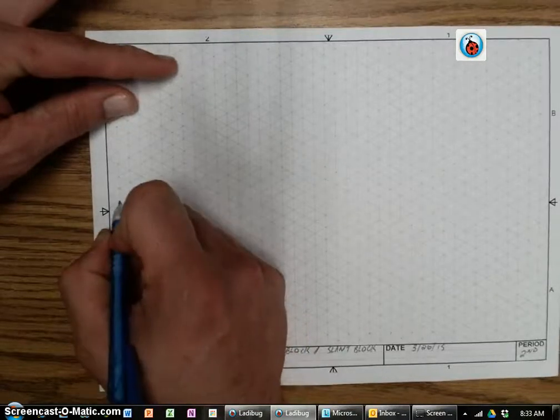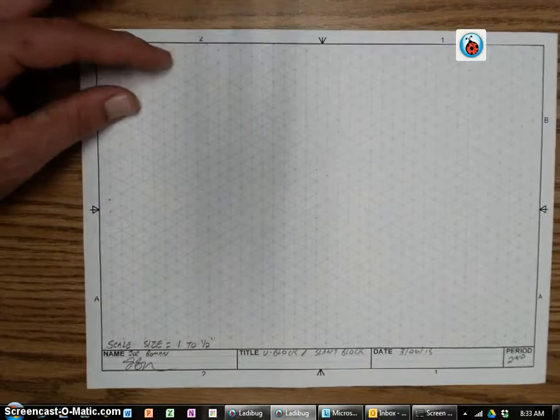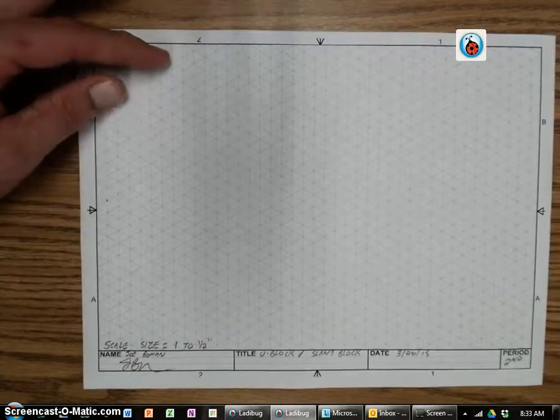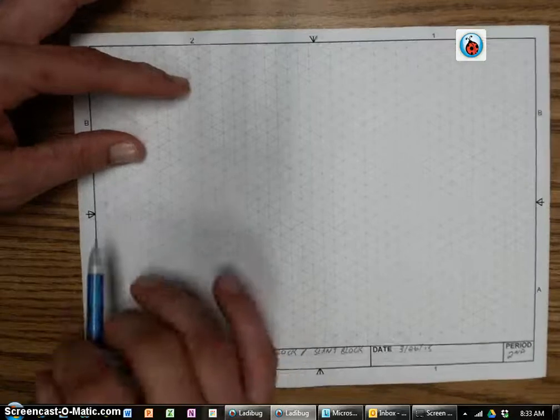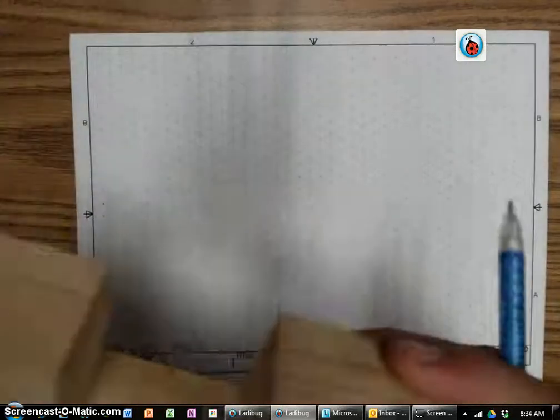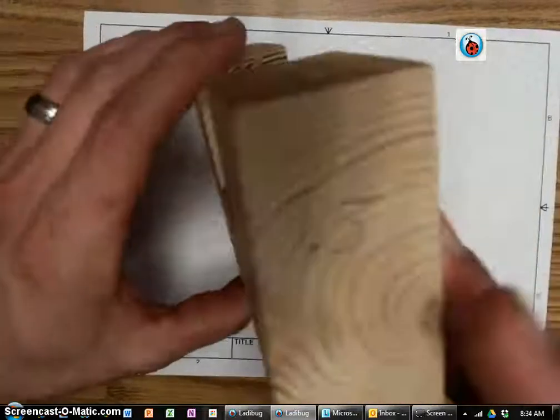Make sure you have your ruler. We always use a ruler when we draw on isometrics. And we always trace our lines that are provided. Here's the shape that we're going to be drawing. This is our U block. These are the different views.